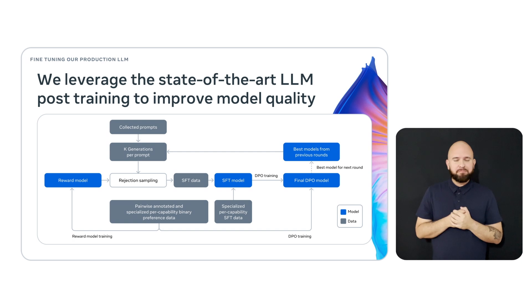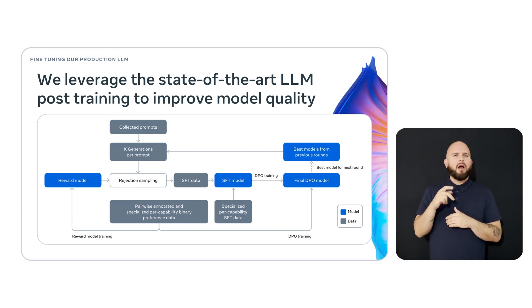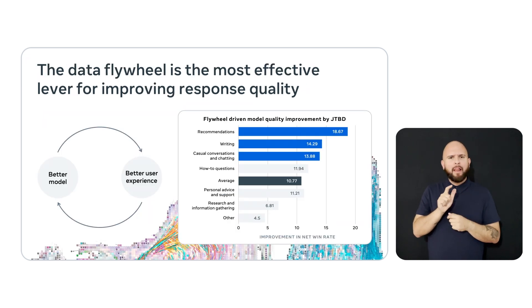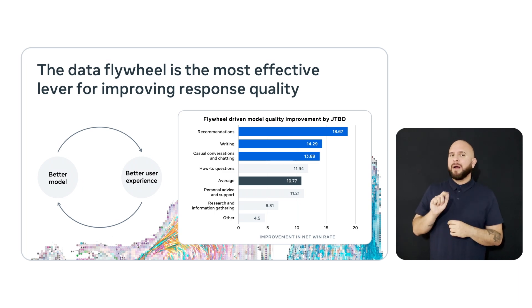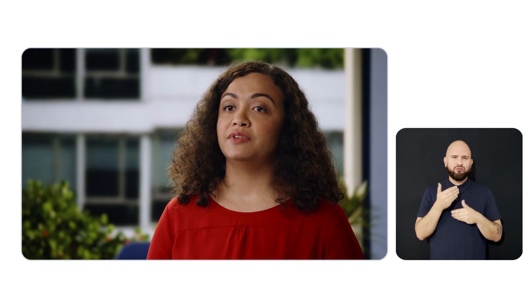On the technical side, we use a combination of rejection sampling, direct preference optimization, and constrained generative policy optimization to fine-tune our production LLM. The flywheel is an effective lever today for improving Meta AI's response quality. It is extremely efficient in helping Meta AI learn and improve for priority jobs to be done, including recommendations, writing, and support — in particular for longer multi-turn and more complex prompts. We also leverage the flywheel to mitigate key failure scenarios around Meta AI's capabilities and language mismatches.